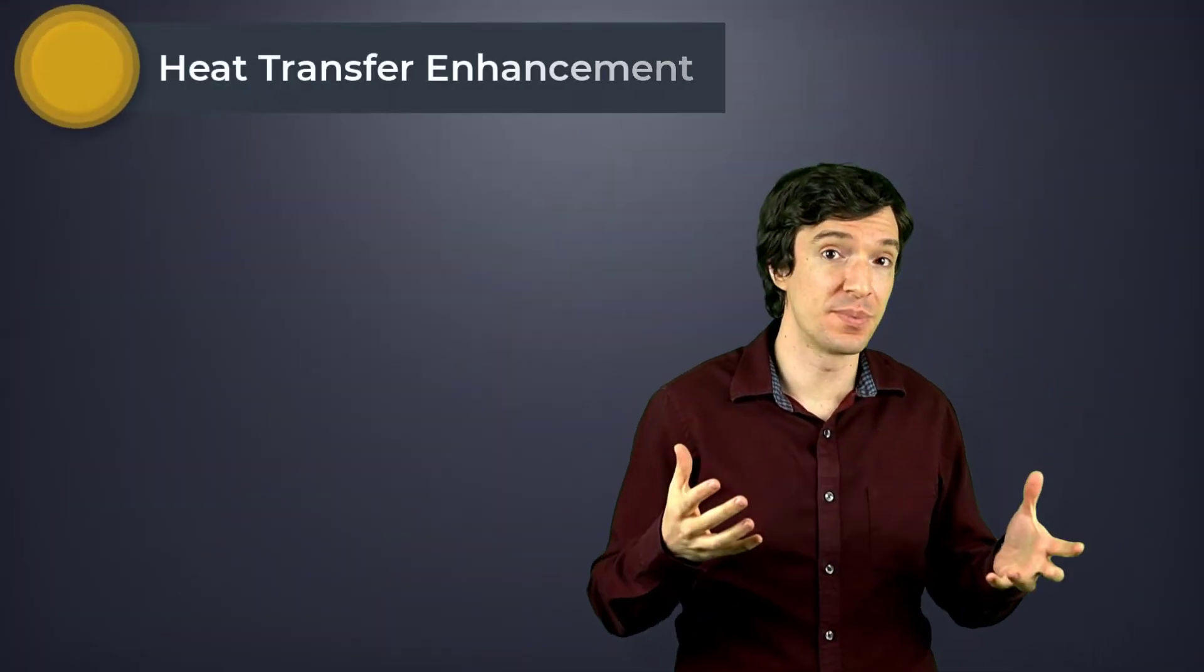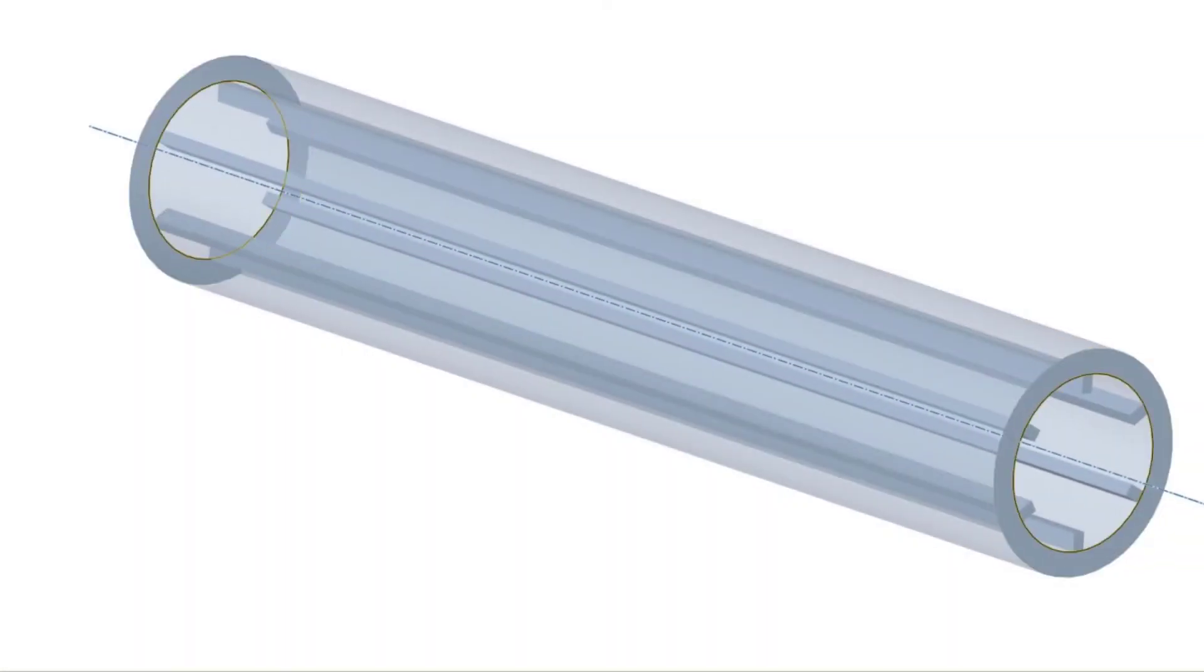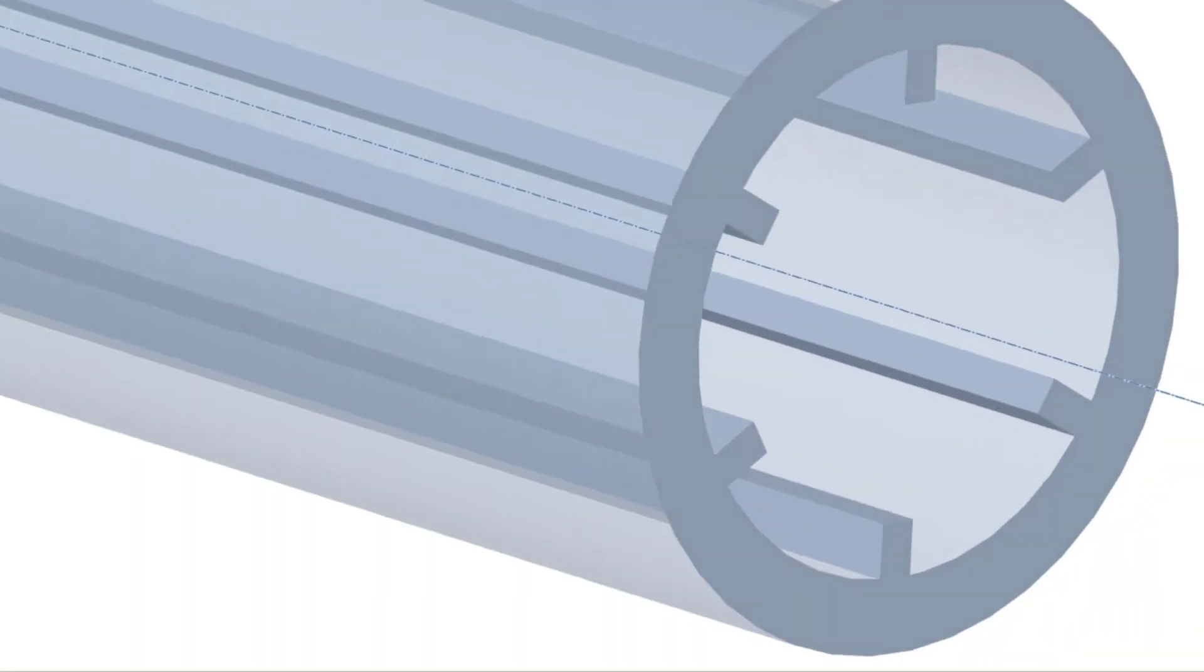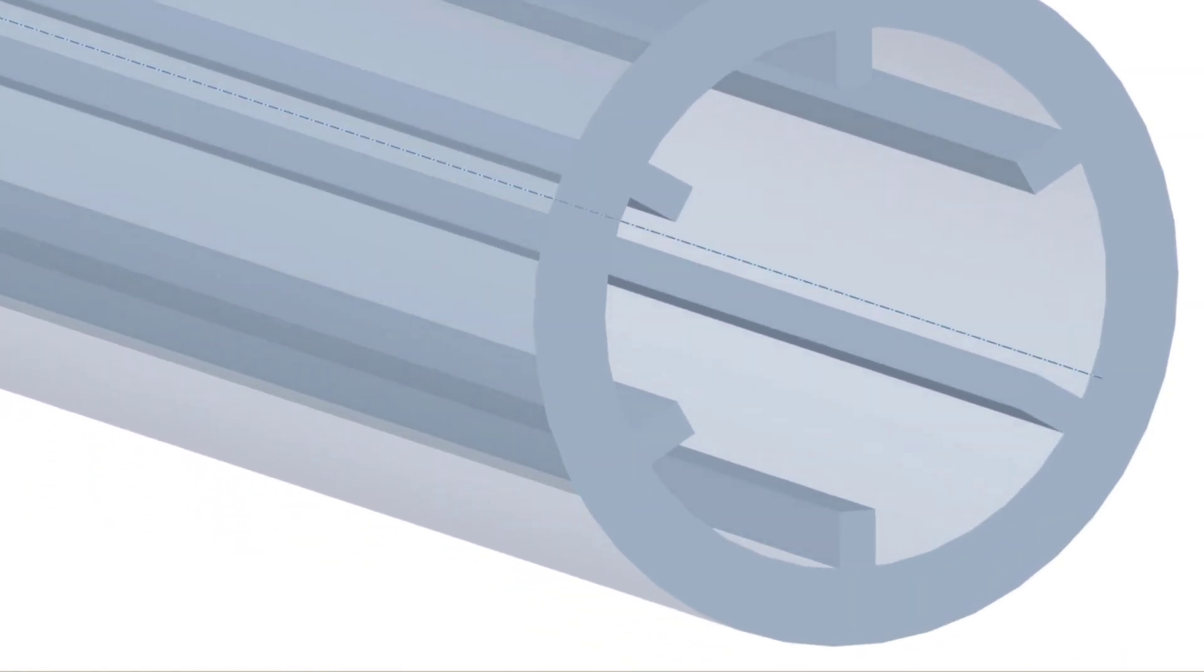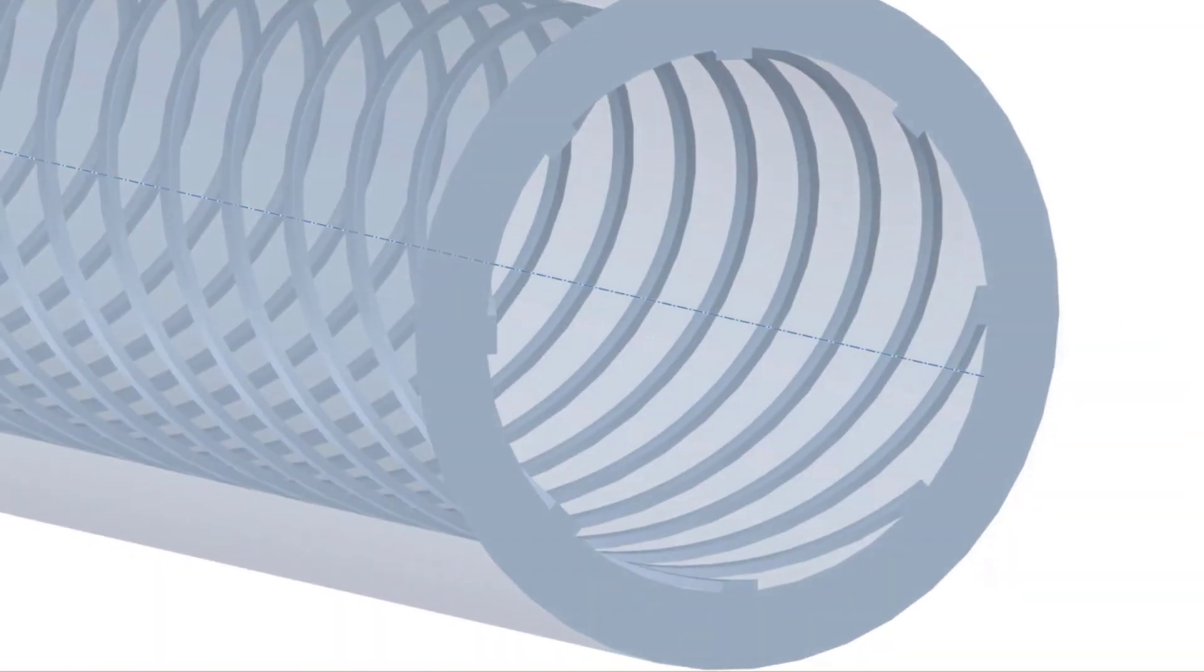We analyzed how we can estimate the heat transfer through pipes, but can we enhance it? The answer is yes. There are multiple ways to do so. One way to accomplish this is by increasing the surface area where the fluid and the solid are in contact. Using longitudinal fins or helical ribs, we can directly accomplish that.